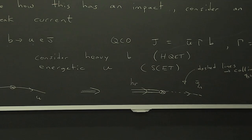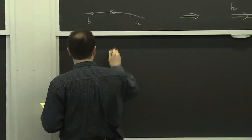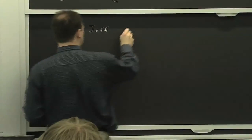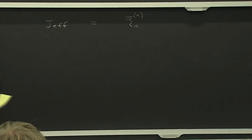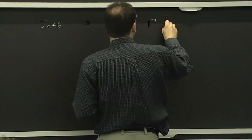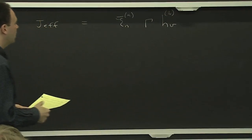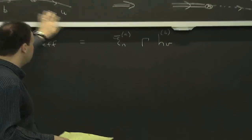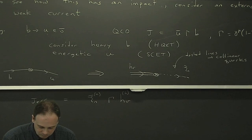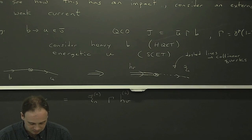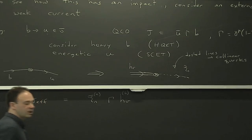I'll reserve the notation of dashed lines for collinear quark propagators. The simple-minded thing is to write down an effective theory current where I replace the full theory fields by effective theory fields — I replace the up quark by a collinear field C_N in some direction, and I replace the heavy quark by H_V, the B quark. That would be the tree-level matching from that particular diagram.